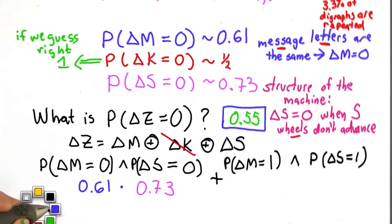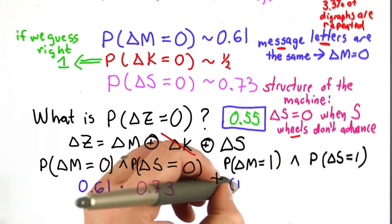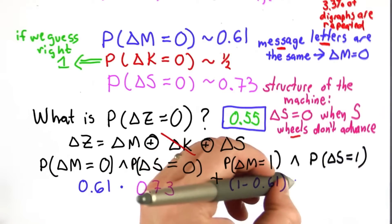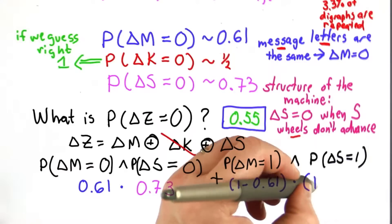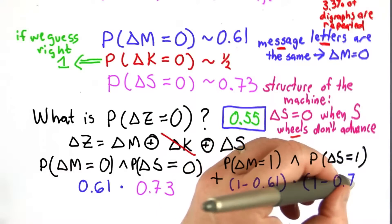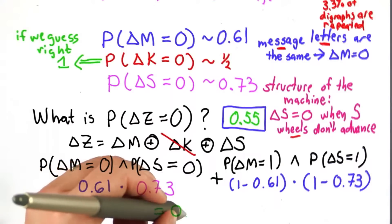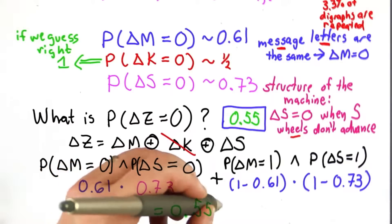And these probabilities are 1 minus the probabilities that we have before. So it's 1 minus 0.61 times 1 minus 0.73. And if you calculate all that, you get 0.5506.